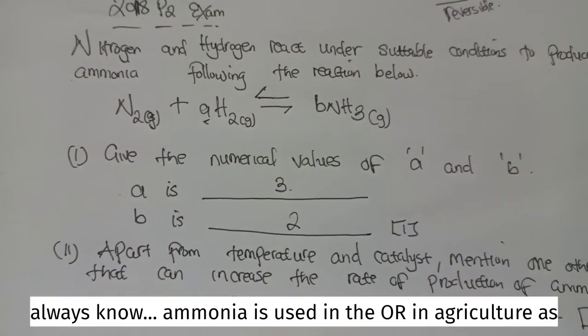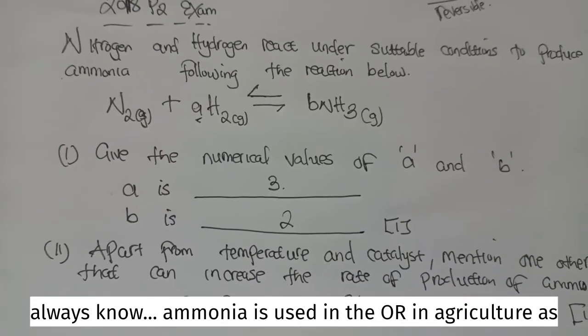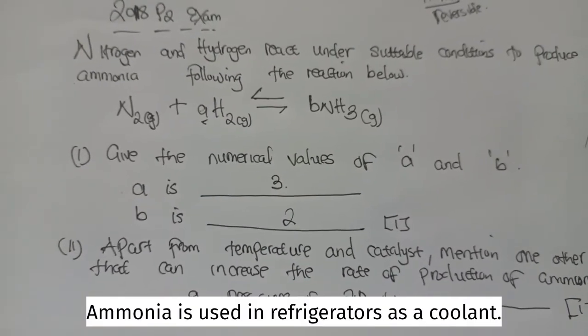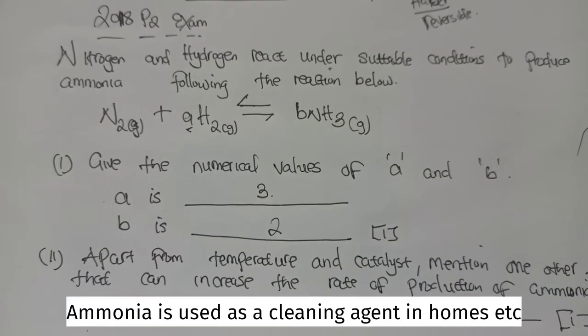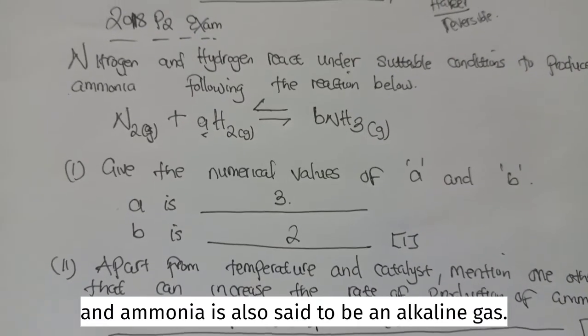This is how best we need to talk about ammonia. And always know, ammonia is used in agriculture as a fertilizer. Ammonia is used in refrigerators as a coolant. Ammonia is used as a cleaning agent in homes. And ammonia is also said to be an alkaline gas.